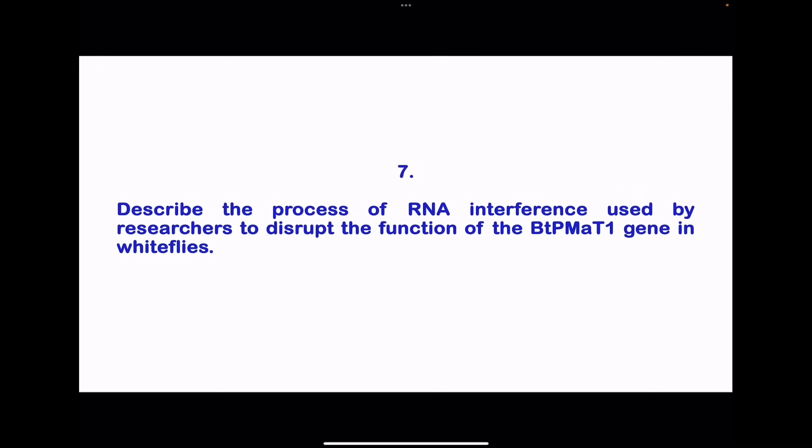Then question seven describes the process of RNA interference used by researchers to disrupt the function of the BTPMPaT1 gene in white flies. You could say RNA interference involves introducing small RNA molecules that are complementary to the target gene, leading to the degradation of the target messenger RNA and the subsequent inhibition of gene expression, so some genes will not be expressed.